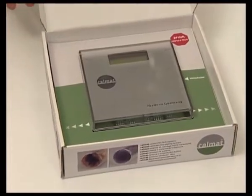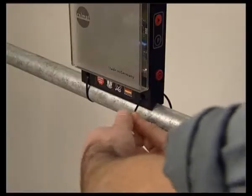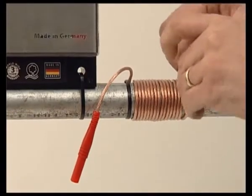CalMAT is installed without opening the pipe. No tools required. First, adjust the unit on the main pipe or on the wall. Then, wind the two impulse cables around the pipe.